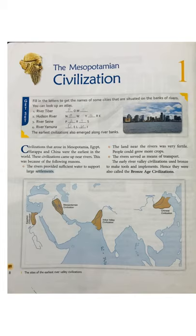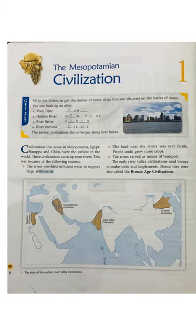On page number 8, you will see a map where four different civilizations are marked. Starting from the left: Egyptian civilization, Mesopotamian civilization, Indus Valley civilization, and Chinese civilization. All these civilizations arose near rivers. The Egyptian civilization developed around the Nile River, the Mesopotamian civilization near and between the Tigris and Euphrates, the Indus Valley civilization near the Indus River, and the Chinese civilization near the Huang Ho River.